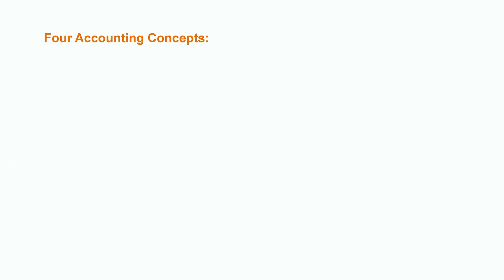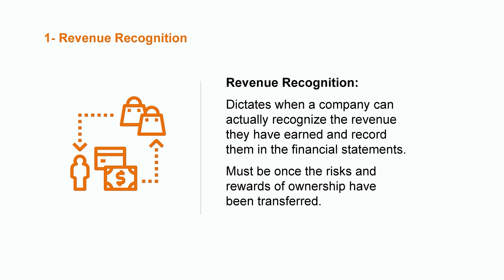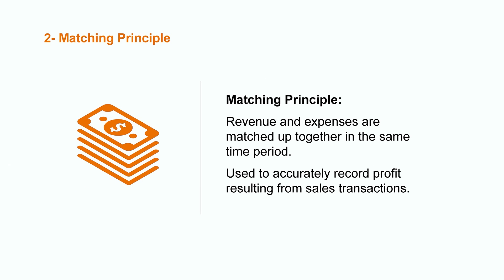Now let's dive into four accounting concepts critical to the accounting process: revenue recognition, matching principle, full disclosure, and historical cost. The first concept is revenue recognition, which dictates when a company can actually record earned revenue in their financial statements. The goal is for companies to record revenue once the risks and rewards of ownership have been transferred. For example, if I'm selling you my watch and you agree to buy it today, I can't recognize the revenue until I actually give you the watch.